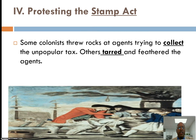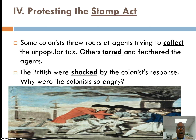One of the ways colonists pushed back against tax collection was that British tax collector agents would be tarred and feathered. Here you can see a picture of this — we'll take a closer look in class. This shocked the British. Pause the video and in your own words explain why you think the colonists might be going to such lengths as tarring and feathering tax collectors.